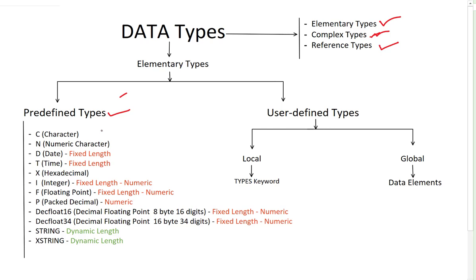Predefined types are by default available in the SAP system kernel. We have: character (C), numeric character (N), date (D), time (T), hexadecimal (X), integer (I), floating point (F), packed decimal (P), and decfloat — which has two variations. We also have string and xstring. These are the predefined types.